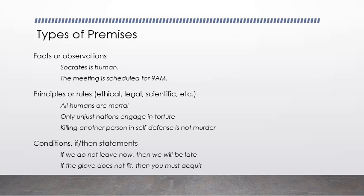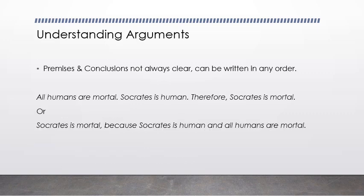When writing or reading an argument, the author marshals these different premises in order to convince the reader of a certain conclusion. The challenge is that premises and conclusions are not always clear — it's not always obvious what the author is trying to prove and what their evidence is. Sometimes you might get these confused. They can also be written in different orders; you don't have to go premise, premise, conclusion.